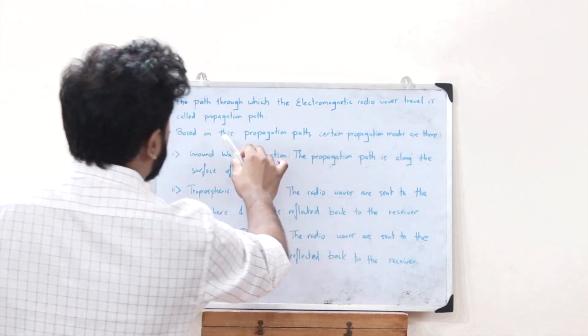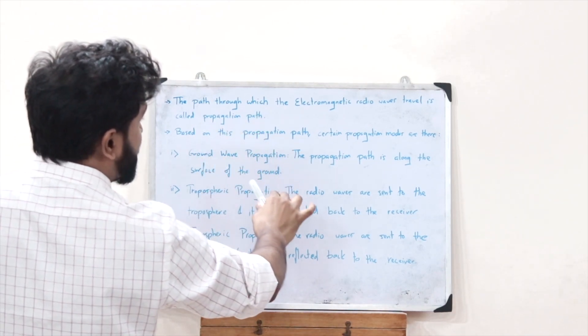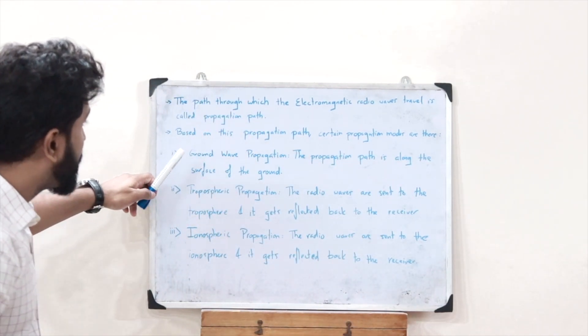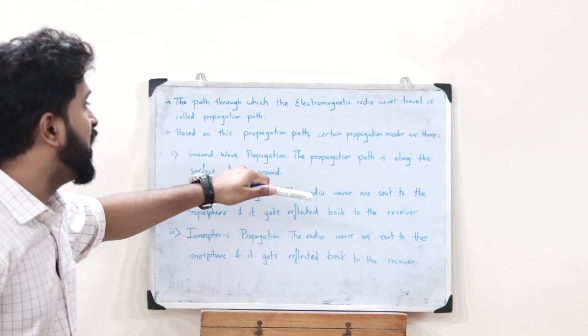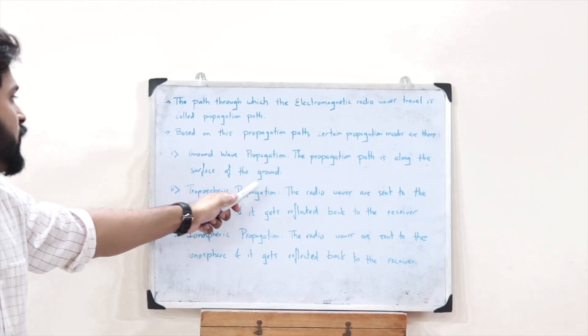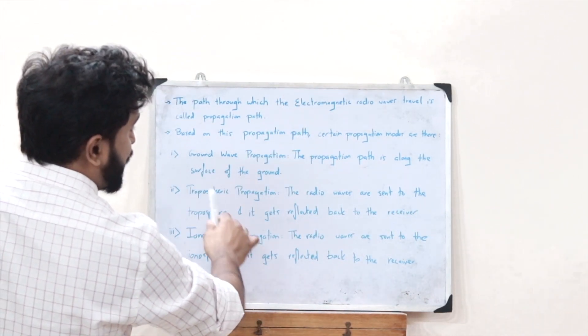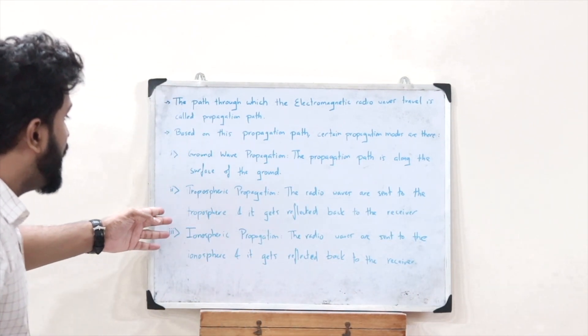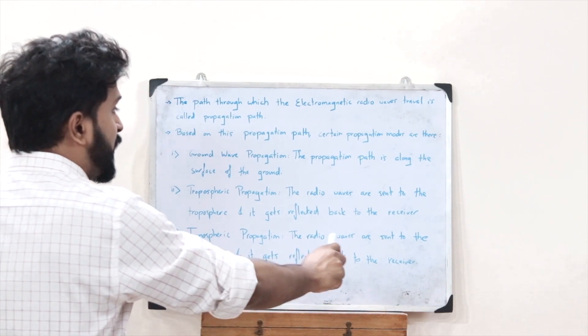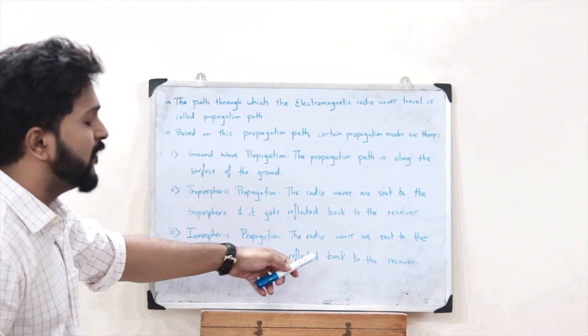To summarize: the path through which electromagnetic radio waves travel is called the propagation path, and based on this propagation path there are certain propagation modes. Ground wave propagation: the propagation path is along the surface of the ground. Tropospheric propagation: radio waves are sent to the troposphere and reflected back to the receiver. Ionospheric propagation: radio waves are sent to the ionosphere and reflected back to the receiver. I hope you now have a clear understanding of radio wave propagation and its different modes. Stay tuned and see you in the next video!